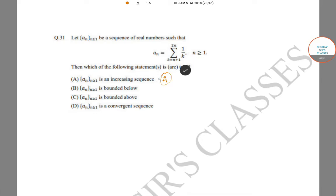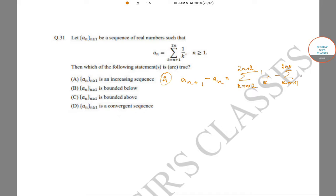Now looking at statement A — is a_n an increasing sequence? We compute a_{n+1} minus a_n. This equals the sum of 1/k from k = n+2 to 2n+2, minus the sum of 1/k from k = n+1 to 2n.